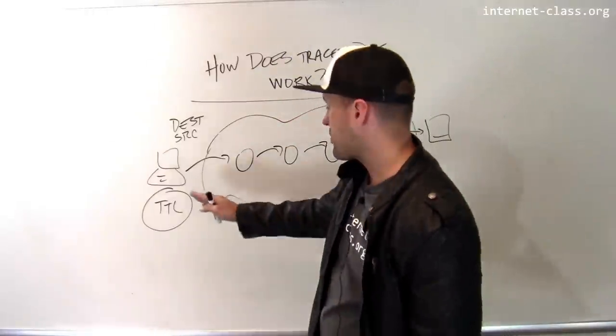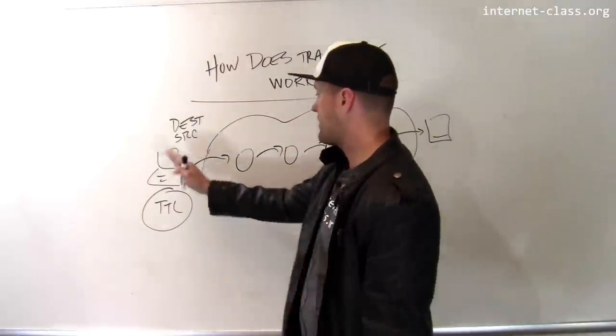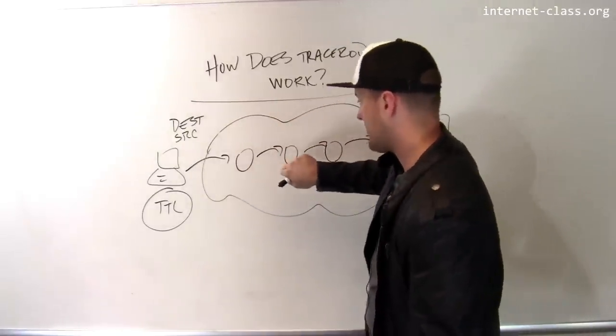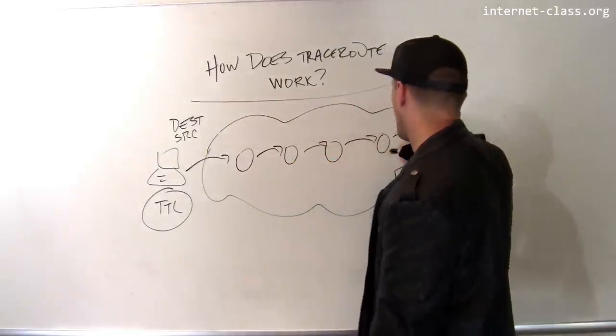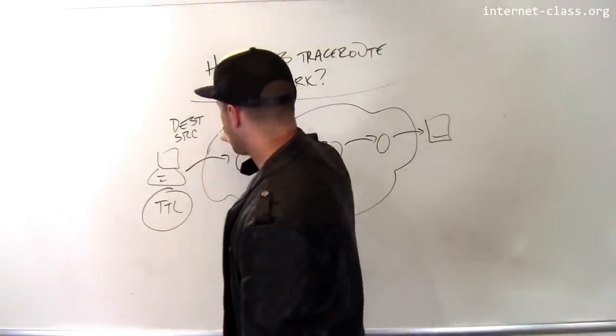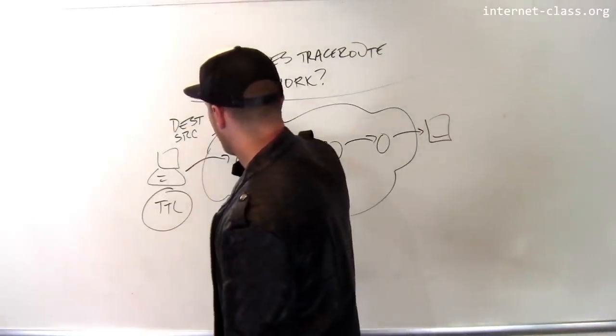First, and traceroute works iteratively, so it starts one hop, two hops, three hops, it's going to identify this guy first, and then identify this guy, and then identify this guy, and keep going all the way to the destination. So the first thing it does is it sends a packet with the time to live of one.